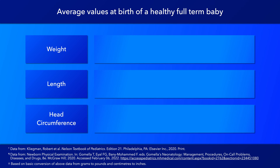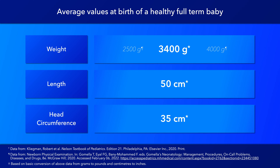According to Nelson's textbook of pediatrics, the average values for a healthy full-term baby are 3,400 grams in weight, 50 centimeters in length, and 35 centimeters in head circumference. The average range of values, as provided by Comellus's textbook of neonatology, are 2,500 to 4,000 grams for weight, 45 to 55 centimeters for length, and 32 to 37 centimeters for head circumference.